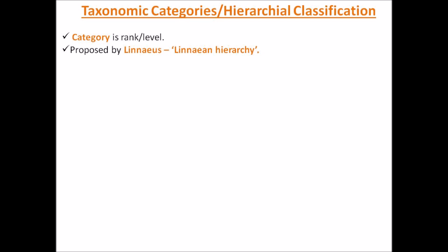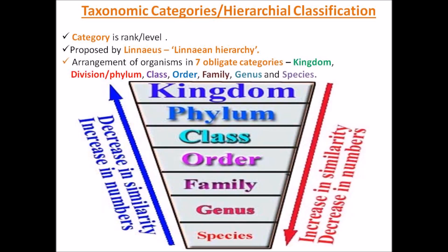Linnaeus arranged all organisms into seven strict — that is, obligate — categories. Total seven obligate categories are there in the system of classification: Kingdom, Phylum, Class, Order, Family, Genus, and Species.